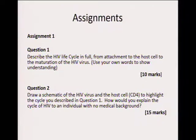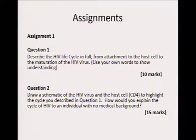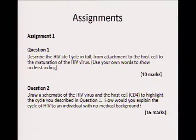Assignment one, question two: draw a schematic of the HIV virus and the CD4 cell — so you must draw two diagrams, one of the HIV virus and one of the CD4 cell — to highlight the cycle you described in question one. How would you explain the cycle of the virus to an individual with no medical background? Most of the time we tell people HIV kills, but what is lacking is knowledge around what exactly happens in the body the moment HIV enters the human body, and this is very fundamental.